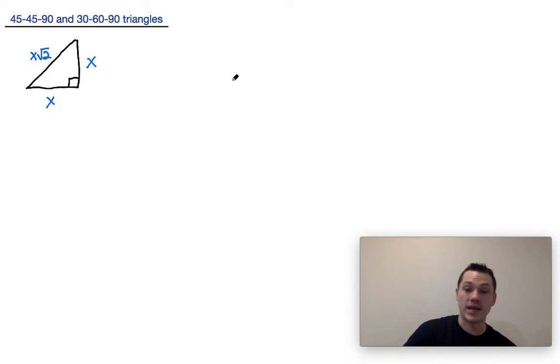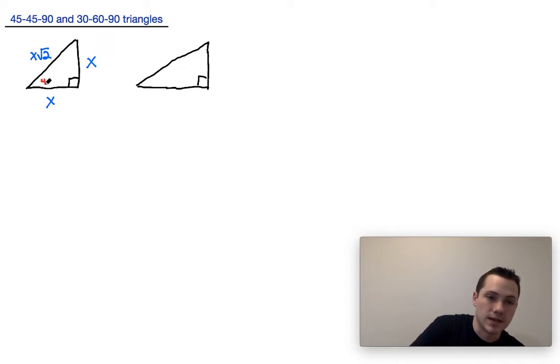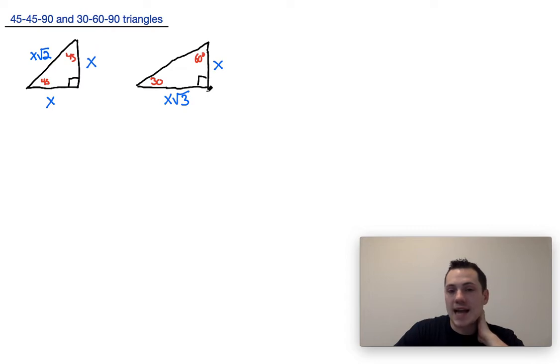Now for 45-45-90 triangles, that ratio, but for 30-60-90 triangles we have a different ratio. For a 30-60-90 triangle, obviously all sides are not the same because all angles are not the same. Let's say this is 30 and this is 60. The side opposite the 30 degree angle will be x and the side opposite the 60 degree angle would be x root 3. The side opposite the 90 degree angle, or the hypotenuse, would be 2x.